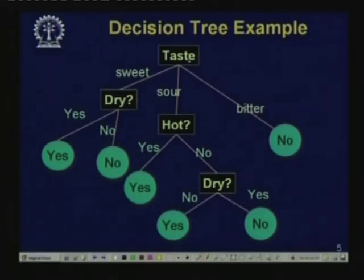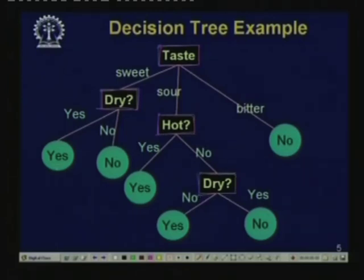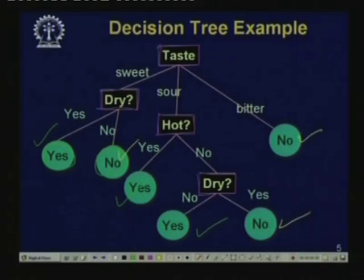Look at this diagram. Every internal node in the decision tree tests the value of an attribute. In this decision tree there are four internal nodes: this node looks at the attribute taste, this node for the attribute dry, this node for the attribute hot, and this node for the attribute dry. Every leaf node corresponds to a classification — some correspond to yes values and others to no values. The branches from an internal node correspond to the different values that attribute can take. Taste can take the values sweet, sour, and bitter, so we have three branches from taste. Hot can take the values yes or no, so we have two branches from hot.